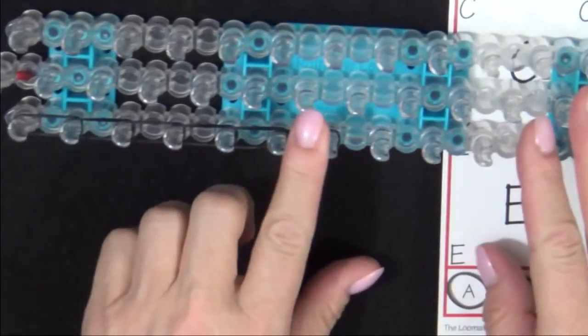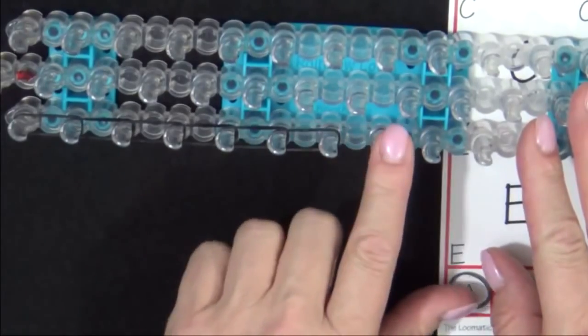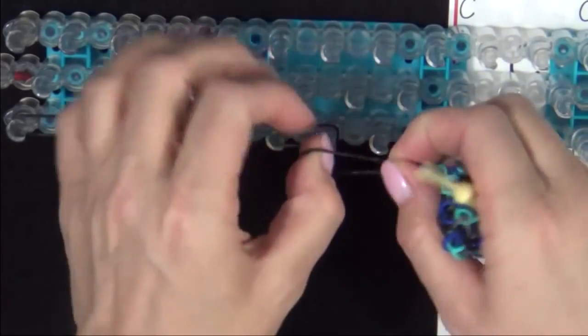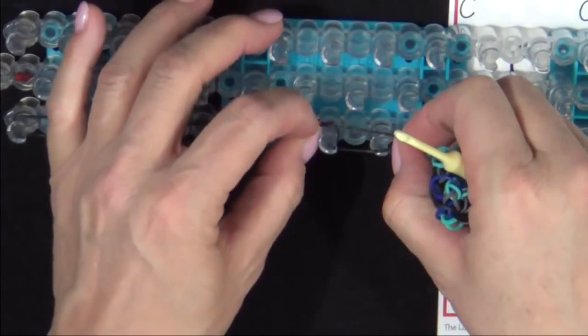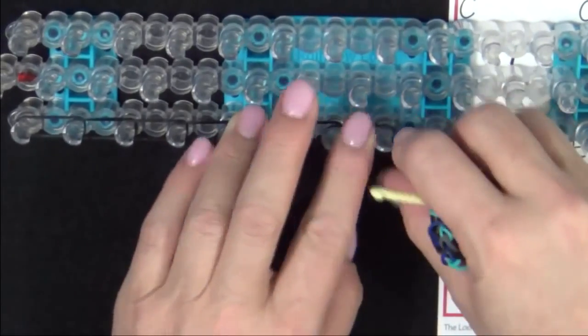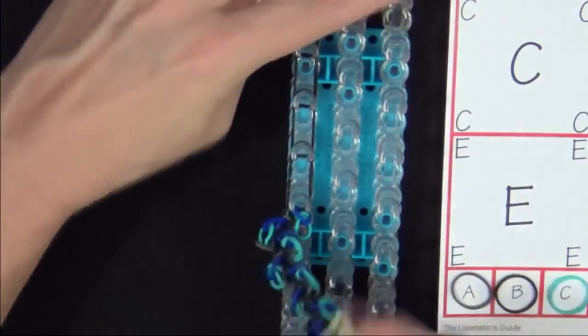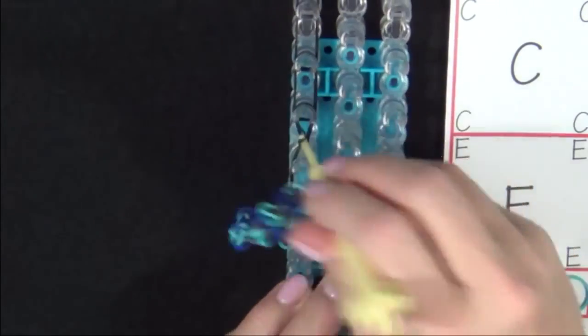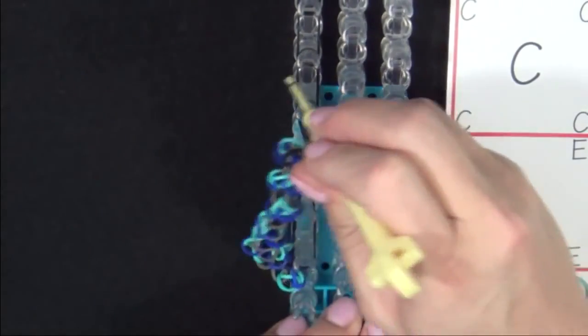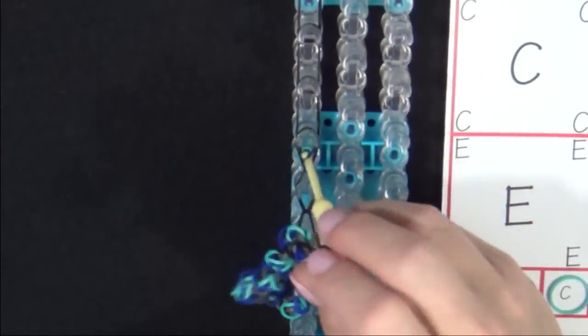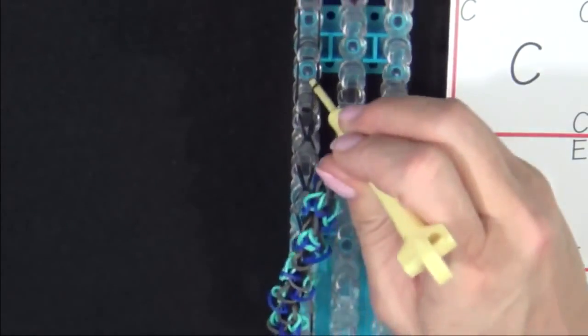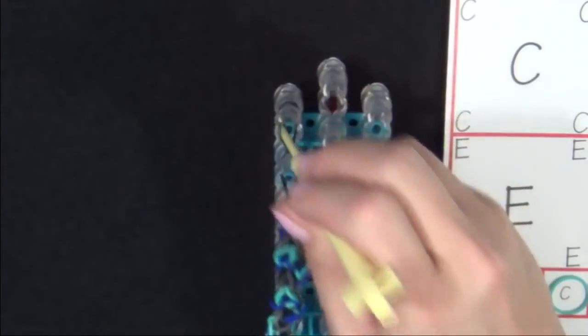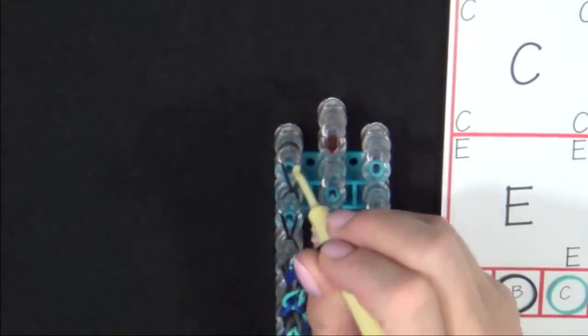After you've placed your last band, you'll place your cap band on this last pin and stretch it to the one behind it. You will locate the cap band on the end of your bracelet and you will pull the cap band from that last pin to the one behind it. Then you'll loop the bands.